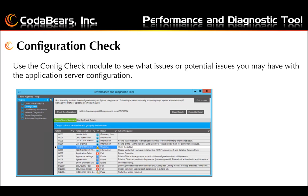A warning alerts you that a potential performance issue may occur — review these items to see if further changes are needed. A fail means the application server did not meet the rule requirements; the action required column displays the recommended action you can take. Not available indicates any item that was not available to test — you may need to correct some setup configuration items and rerun the configuration test.